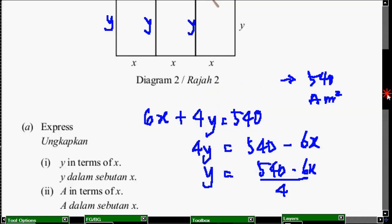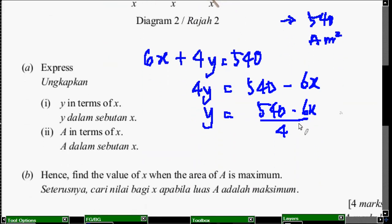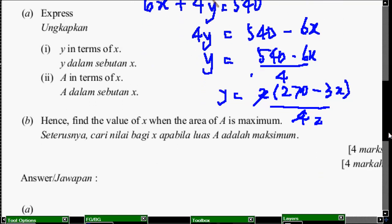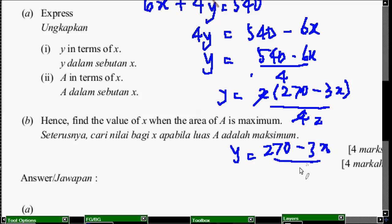So, jadi, kalau kita nak buat, dia nak Y in term of X. Jadi, kena manipulate lah. Yang empat Y sama juga dengan lima ratus empat puluh. Yang ni, X ni kita pergi sebelah. Kita jadi tolak. Dan, Y sahaja. Maka, kita bahagi dengan empat. Okay. So, kita dapat, kita boleh kecilkan. Yang ni boleh simplify. Keluarkan nombor dua. Keluarkan dua. Tinggal dua ratus tujuh puluh. Yang ni, tinggal tiga. So, kita bolehlah buat kecilkan. So, kita akan dapat, dia punya, ni adalah, Y sama juga dengan dua ratus tujuh puluh tolak tiga X per dengan dua. Itu dia punya equation.